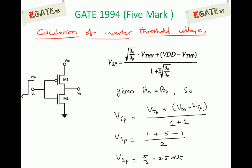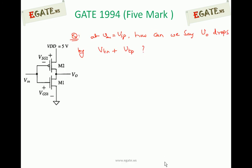In the question, βN equals βP, so the VSP equation simplifies. Substituting: VSP = (VTN + VDD − VTP) / 2, which gives (1 + 5 − (−1)) / 2 = (1 + 5 + 1) / 2 = 7/2. Wait — substituting correctly: (VTN + VDD + |VTP|)/2 = (1 + 5 − (−1))/2 = 7/2. The result is VSP = 2.5 volts — the inversion threshold point.